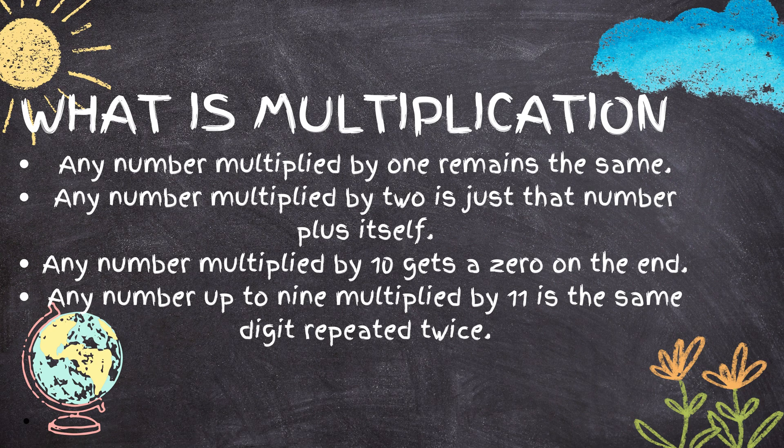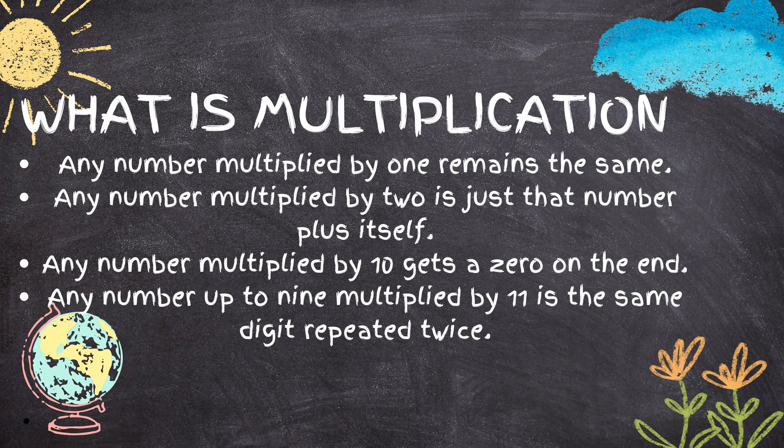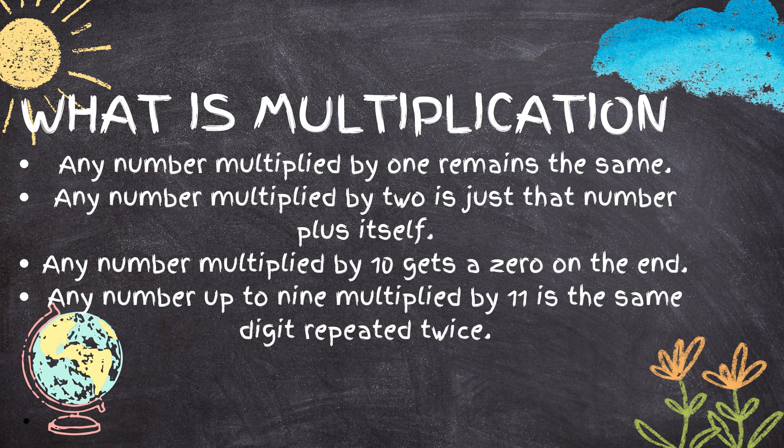Any number multiplied by 10 gets a 0 at the end. 1 times 10 equals 10, 2 times 10 equals 20, 3 times 10 equals 30.